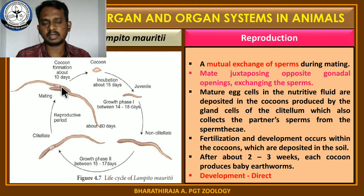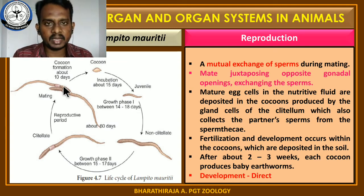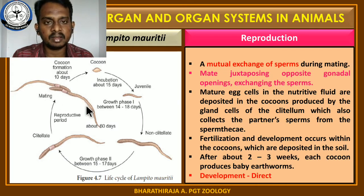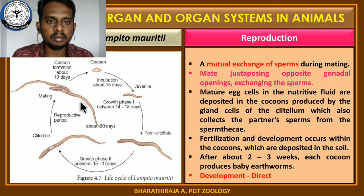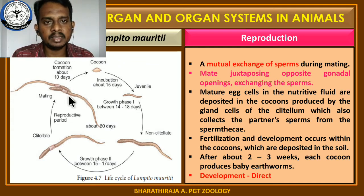See the picture. The male genital aperture is located on the 18th segment of the body, especially on the dorsal side. This male genital aperture exactly contacts with the spermathecal opening of the partner worm. So mating takes place between two worms — worm A and worm B. During mating, the male genital aperture of worm A directly contacts with the spermathecal opening of worm B. As a result, the sperms of worm A are deposited into the spermathecal opening of worm B.